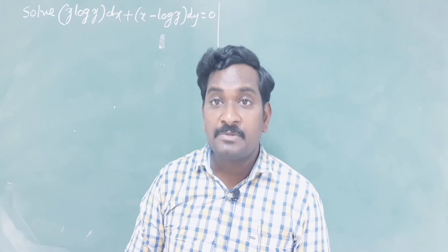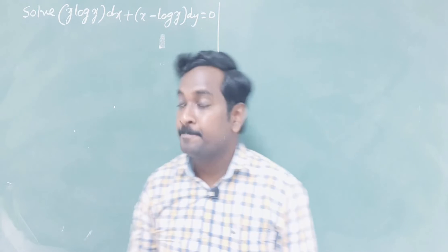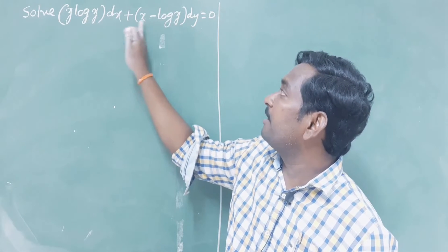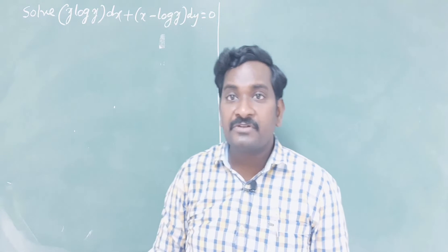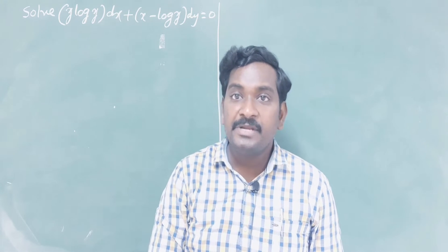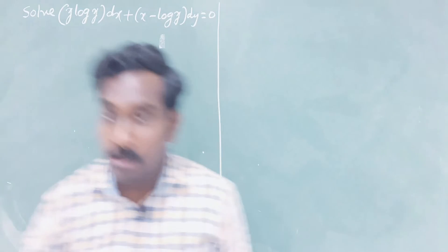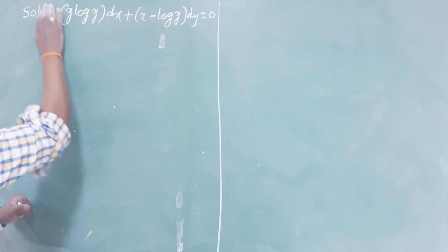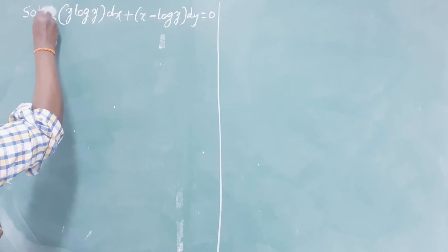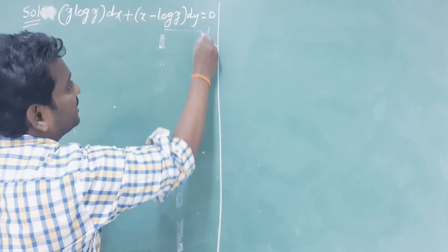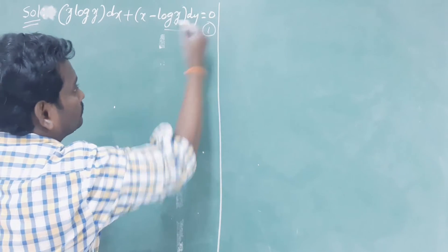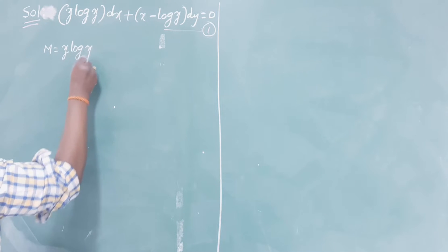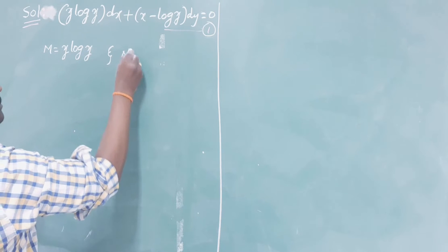This is another problem in the concept of integrating factors. Solve: y·log(y) dx + (x - log y) dy = 0. The given differential equation is in the form M dx + N dy = 0. First, check whether the given equation is exact or not. Here M = y·log(y) and N = x - log(y).